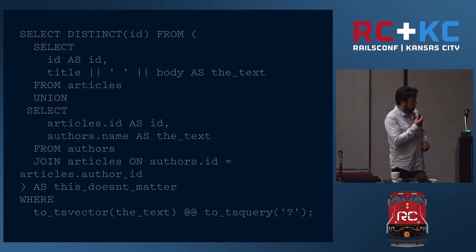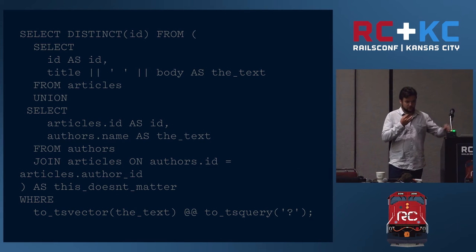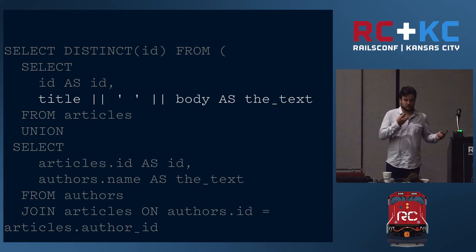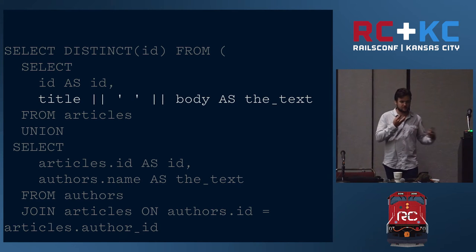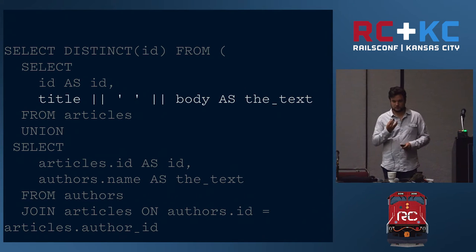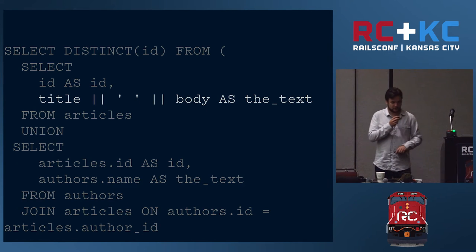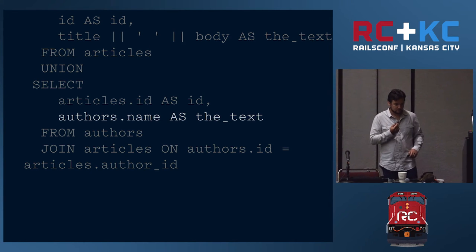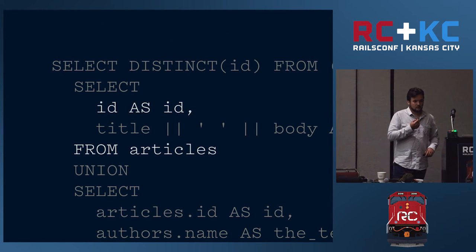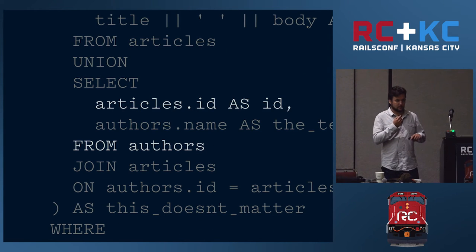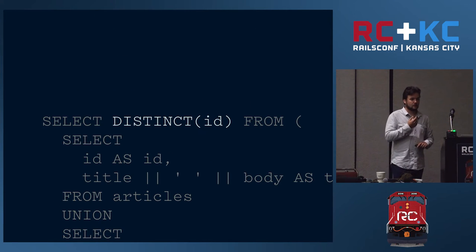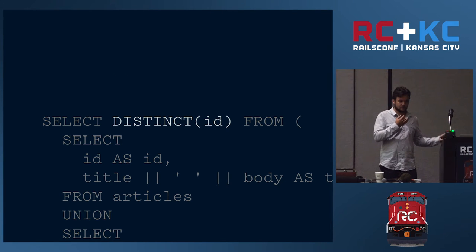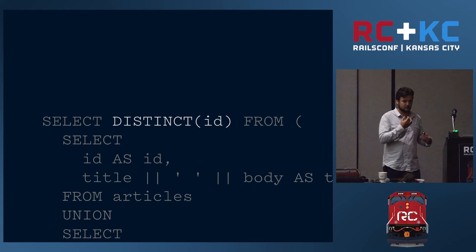Here's an example of making that same query with full-text search. We're looking at the text we want to join — we're saying title, concatenate with an empty space, then the body, called 'text' just to give it a name Postgres is happy with. The two pipe operators are the concatenation. We're also pulling in the author's name as text, the article ID, and the article ID from authors. We want unique results so the same article doesn't show up multiple times in our query.